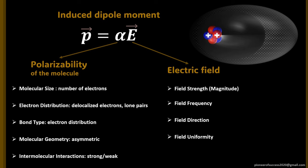The polarizability of the molecule decides the strength of the induced dipole moment. For example, a molecule with more electrons — that is, a larger molecule — will polarize more than a smaller molecule with fewer electrons, given the same electric field. Similarly, the electron distribution, the type of bond (sigma or pi), and the symmetry or asymmetry of the molecule all decide the strength of the polarization experienced.